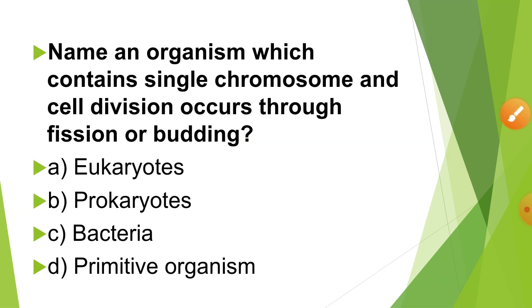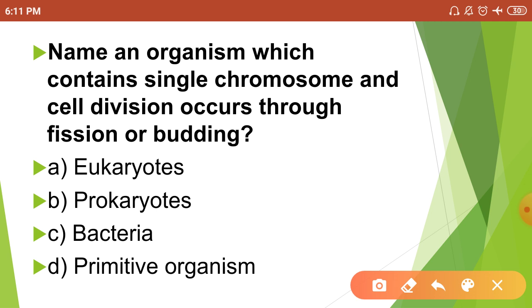Name an organism that contains a single chromosome and cell division occurs through fission and budding. Which cell is this? Eukaryotic, prokaryotic, bakaryotic, or primitive organism? This is prokaryotic.